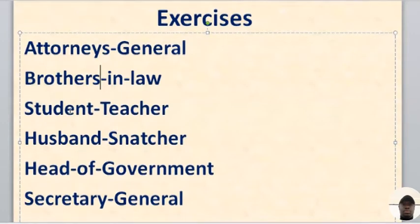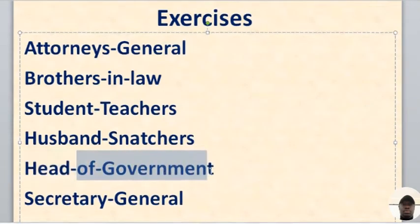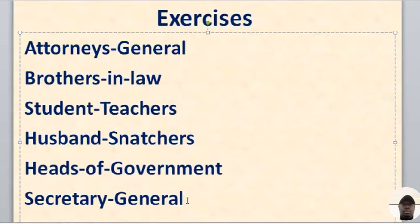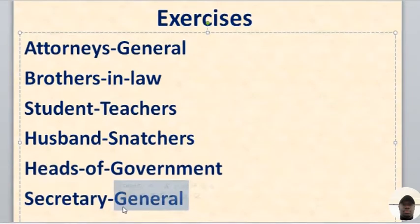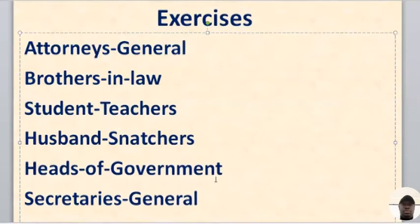Student teacher — both of them are nouns, so what you do is just pluralize the last word: student teachers. Husband-snatchers — the same thing. Head of government — you have a prepositional phrase which begins with the preposition of and ends with a noun, government, so just pluralize the noun: heads of government. Secretary-general — if the compound word contains a noun and an adjective, just pluralize the noun, so it changes from secretary-general to secretaries-general. These are the correct forms, so please take note of the rules.